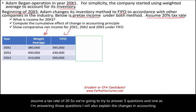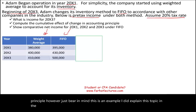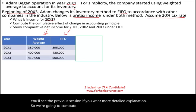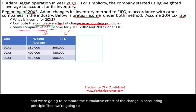Bear in mind this is an example. I explained this topic in the previous session, so see that session for a more detailed explanation. We're going to compute net income for 20x3, compute the cumulative effect of the change in accounting principle, and then show comparative net income for 20x1, 20x2, and 20x3 under FIFO.